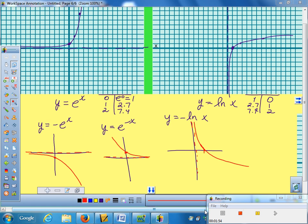And last but not least, if I put a negative on the x, such as y equals natural log of a negative x inside the function, then that, of course, means I have flipped over the y-axis.